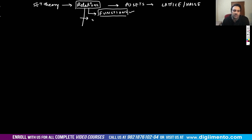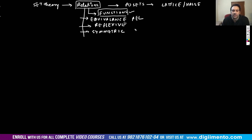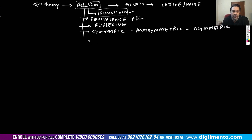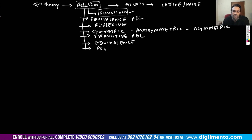We have already discussed equivalence relations, reflexive relations, symmetric relations, anti-symmetric relations, asymmetric relations, transitive relations, posets (partially ordered sets), and totally ordered sets (tosets). These things regarding relations we have already covered.